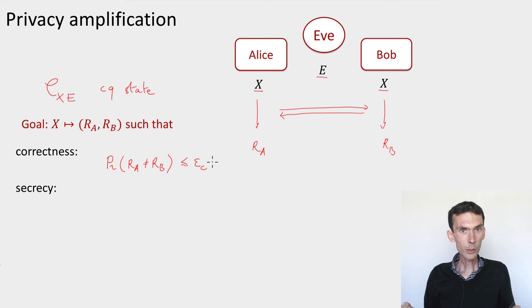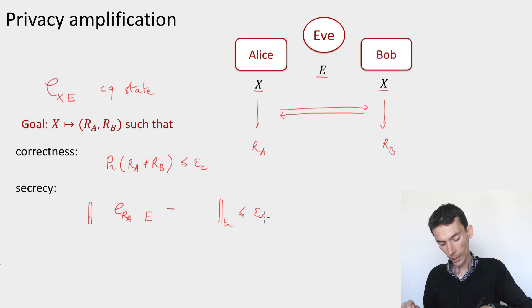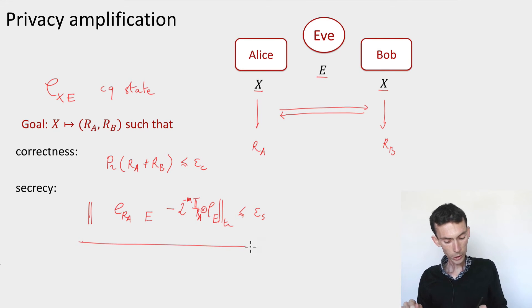And then we also want security or secrecy. This should say that if I look at the joint state of, let's say, Alice's output (it's the same as Bob's output) and the eavesdropper side information, then this should be indistinguishable using the trace distance measure up to some security error εs from the totally mixed state on Alice's system tensor product with the eavesdropper side information. That's the secrecy requirement.